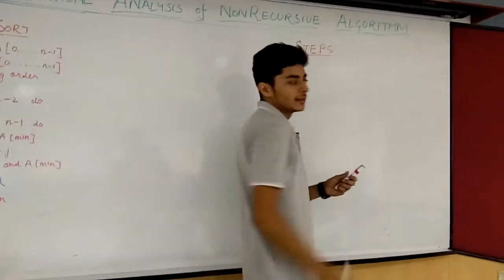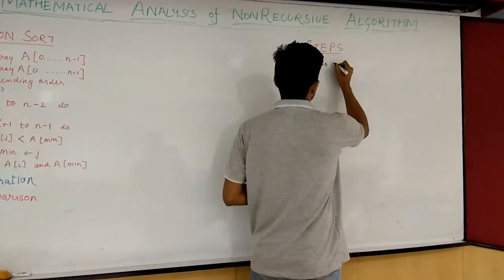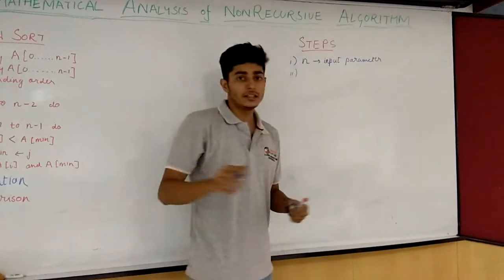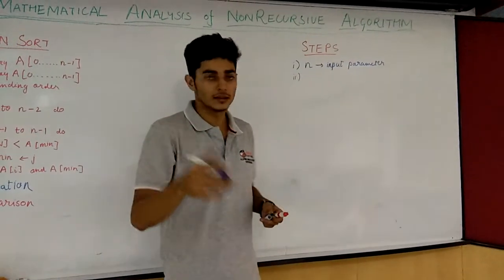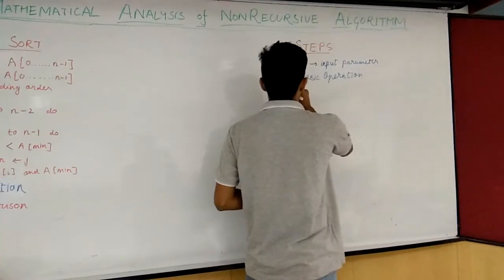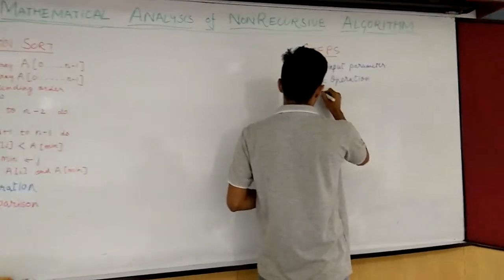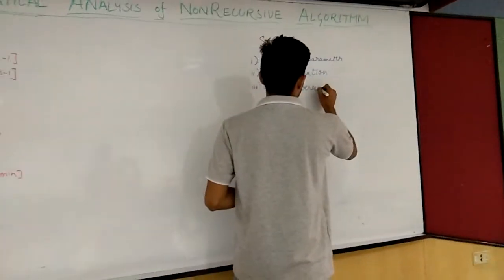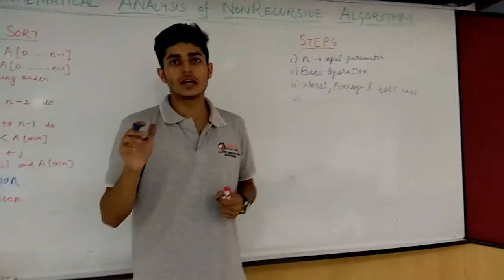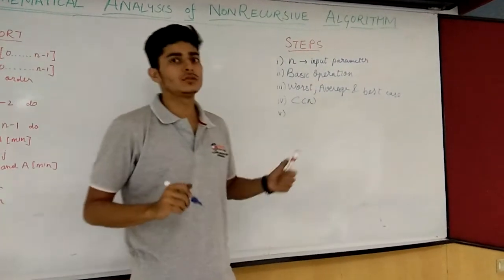Those steps are: the first step is to determine the input parameter — let's take that as n. The second step is to determine the basic operation that the algorithm is performing. The third step is to determine the worst, average, and best case. The fourth step is to calculate the summation for that algorithm. The fifth step is to simplify that summation.